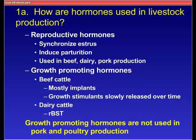Switching gears to hormone use in livestock production — hormones are used in two basic ways. The first are reproductive hormones, used to synchronize estrus and induce parturition, used in beef, dairy, and pork production. What we're mainly concerned about here are the growth-promoting hormones. When talking about growth-promoting hormones, we're usually talking about beef cattle implants — designed to slowly release growth stimulants over time. I've also included RBST, which is used in dairy cattle. Its use is decreasing but remains somewhat controversial. Importantly, growth-promoting hormones are not used in pork and poultry production.